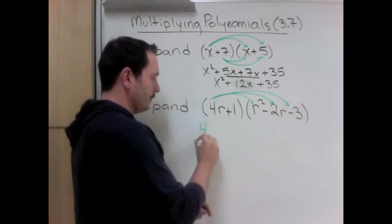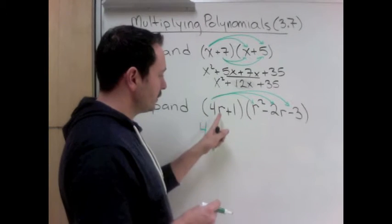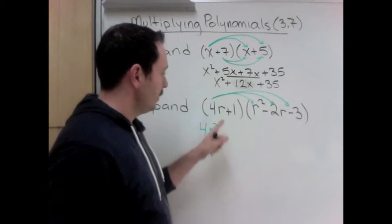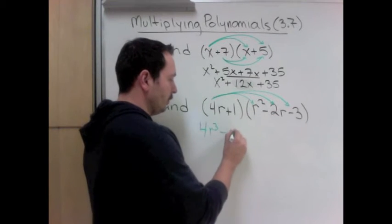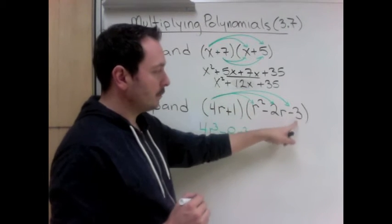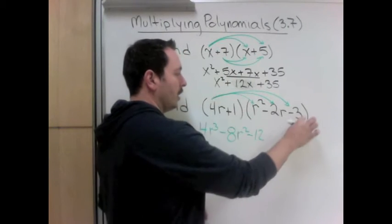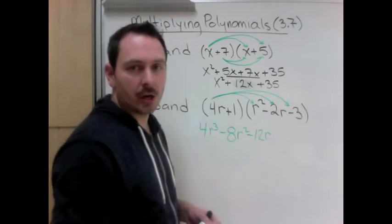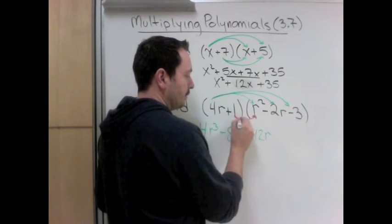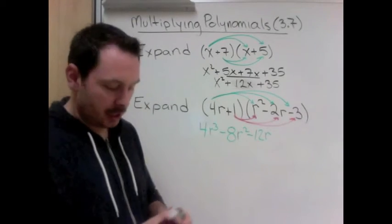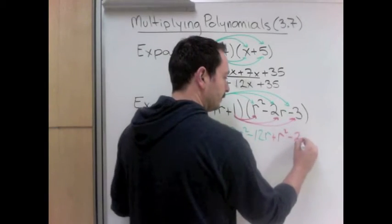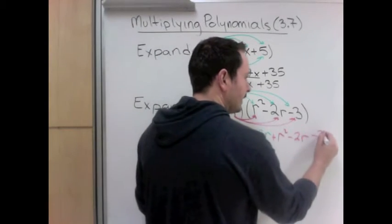So 4 times 1 is 4. When we multiply letters we add the exponents. So r times r squared, that's an r¹ and an r², is r³. Then 4r times negative 2r: 4 times negative 2 is negative 8, r times r is r². Now the 4r must multiply negative 3: 4 times negative 3 is negative 12, r times nothing or 1 is r. Now let's look at the second part. The second number must multiply each term. So 1 times r² is r². 1 times negative 2r is negative 2r. 1 times negative 3 is negative 3.